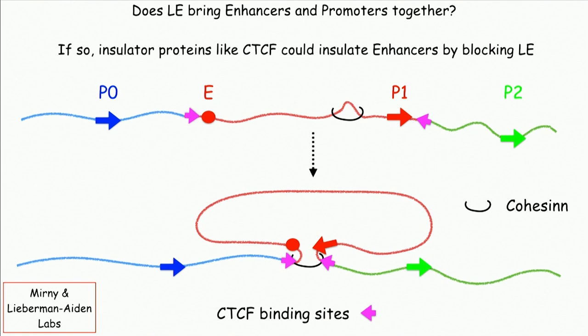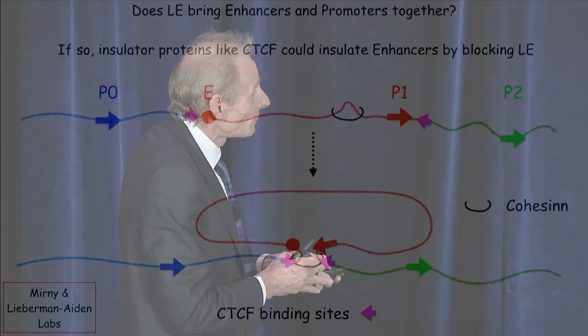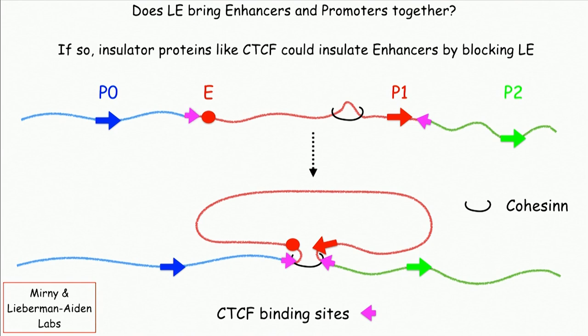Through loop extrusion, the loop is extruded until the enhancer and the promoter come together, and the enhancer can then act on the promoter and turn the gene on. A particular factor called CTCF — a site-specific DNA binding protein — sits on the DNA and stops the loop extrusion process from going beyond that point. So if you've got a CTCF binding site at each end, the enhancer can only be brought to its legitimate promoter through loop extrusion, and cannot reach the wrong promoters. That's why cohesin does loop extrusion in all our cells.